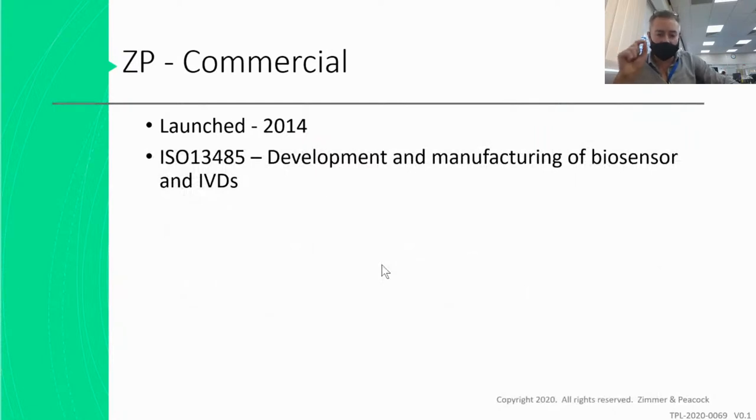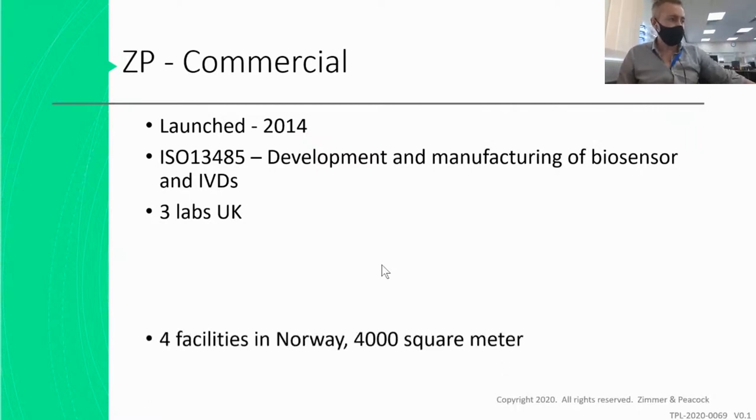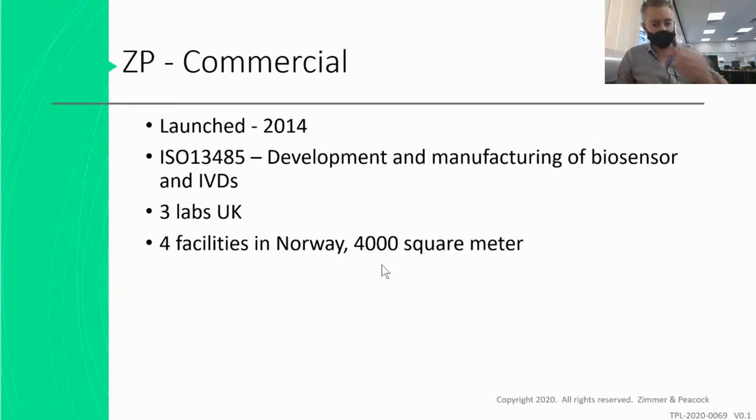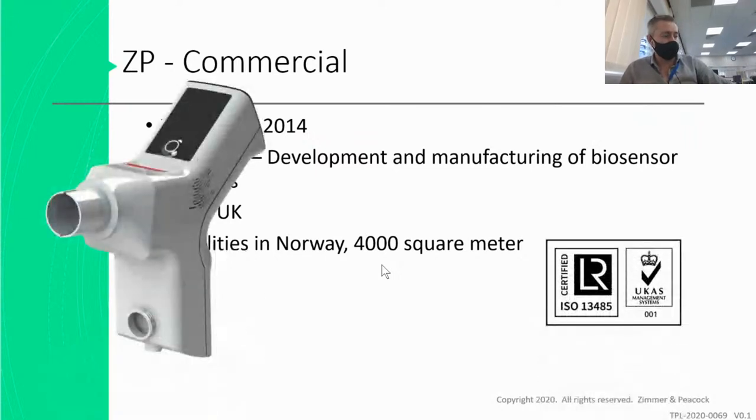The business was launched in 2014. We're ISO 13485, and that's significant because it means that the products that come from us can be medical grade and used for the diagnosis of diseases in human beings because we are ISO 13485. We have three labs in the UK, one of them's behind me, four facilities in Norway. The biggest facility in Norway is 4000 square meters, so it's not big and it's certainly not small. And as I say, we're ISO 13485. We're very relevant. This is a technology that's on the market for detecting COVID-19 on the breath.